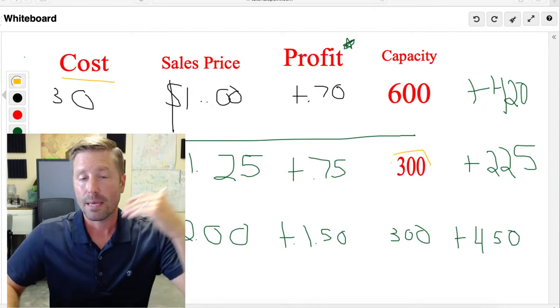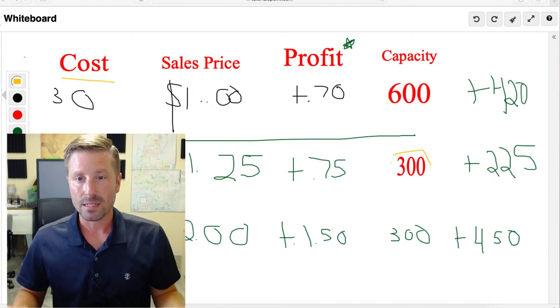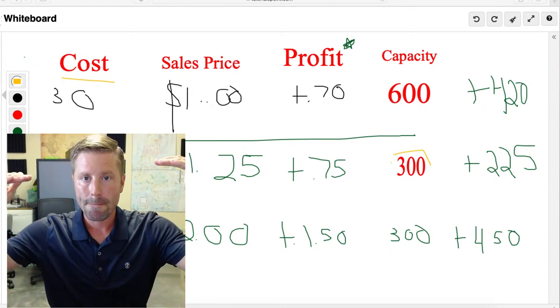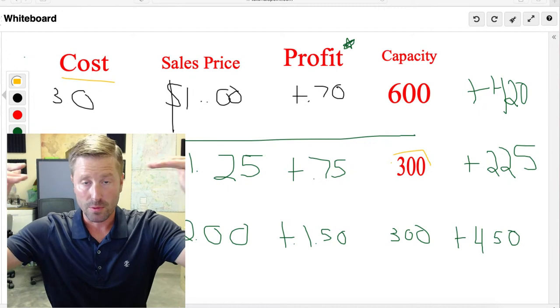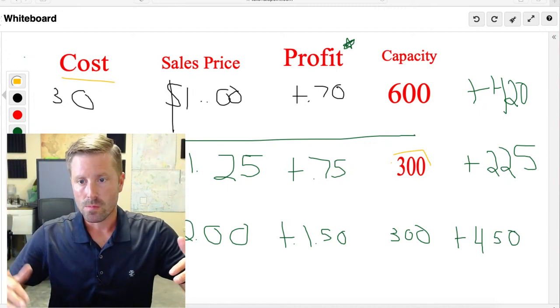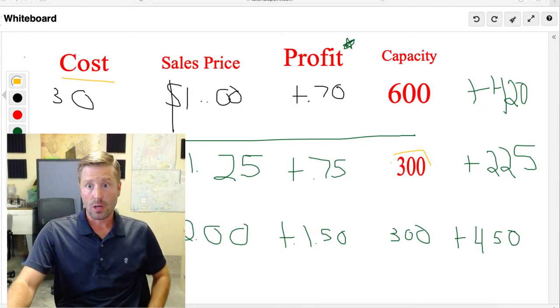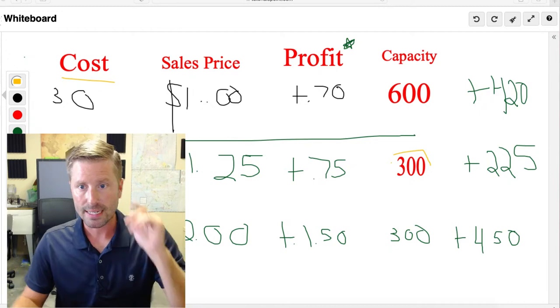So we sell 16.9 ounce bottles which we can get at Walmart and Sam's Club for 50 cents. So let's say you sell those bottles right here, a dollar twenty-five. That means you're making 75 cents.